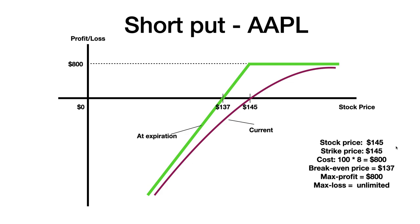The breakeven price will be $137 because you take the stock price and subtract the premium to get the breakeven price of $137. So the max profit is $800 while the max loss is unlimited. If you want to make any profit, the stock price has to be more than $137 at expiration. If the stock price goes below $137, you experience a loss.